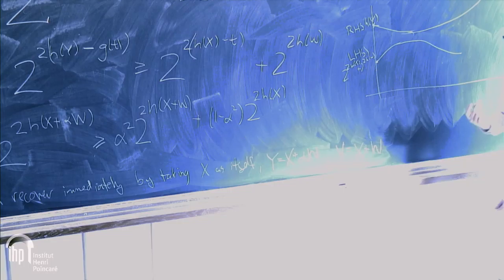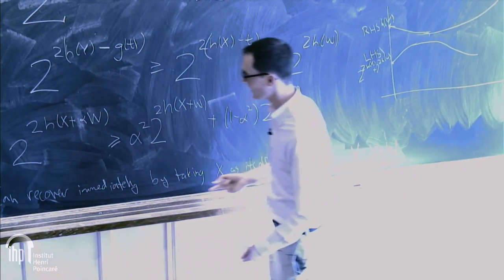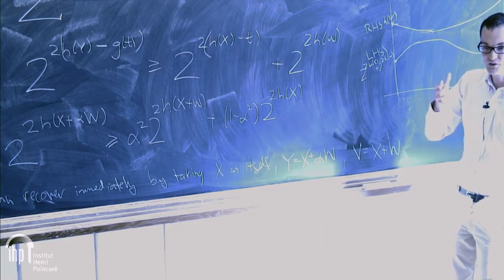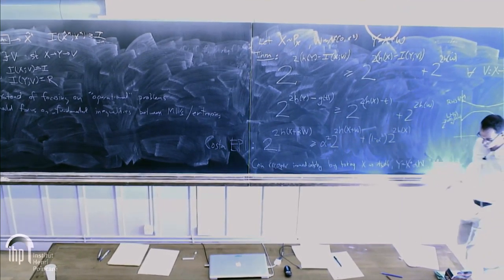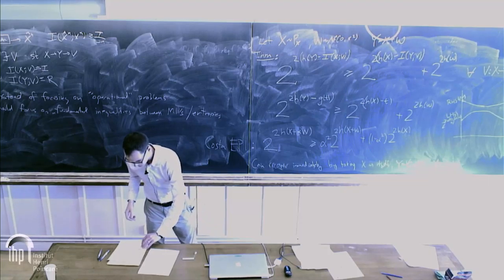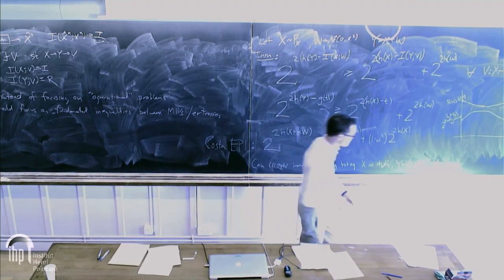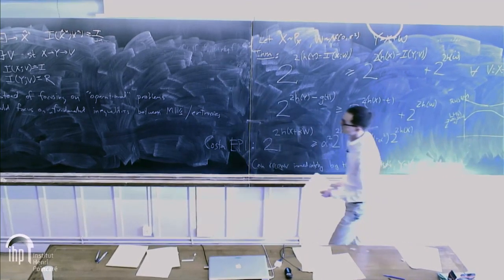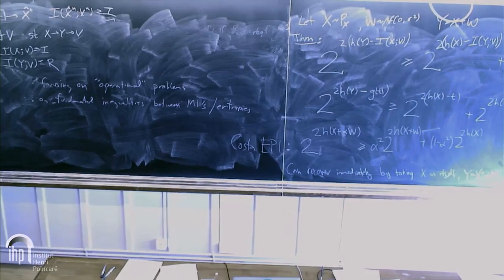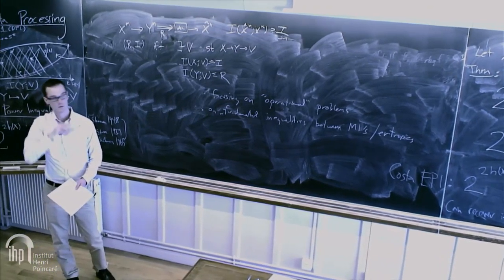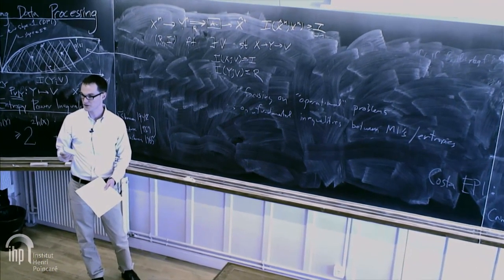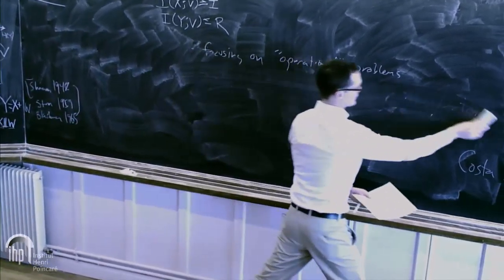The concavity of entropy powers — known since around 1985 — was only providing a small piece of the picture, corresponding to the case where the second channel is restricted to be Gaussian. Our strengthening lets us adjust that channel to be anything we want. This concavity also holds if X is Gaussian and W is not — you only need one of them to be Gaussian.